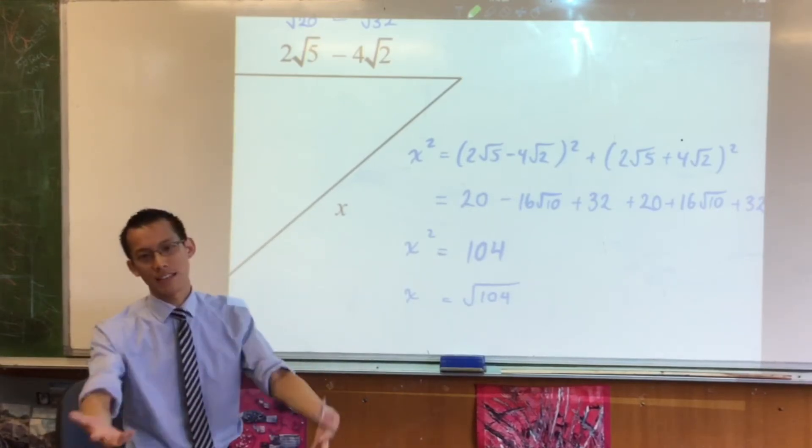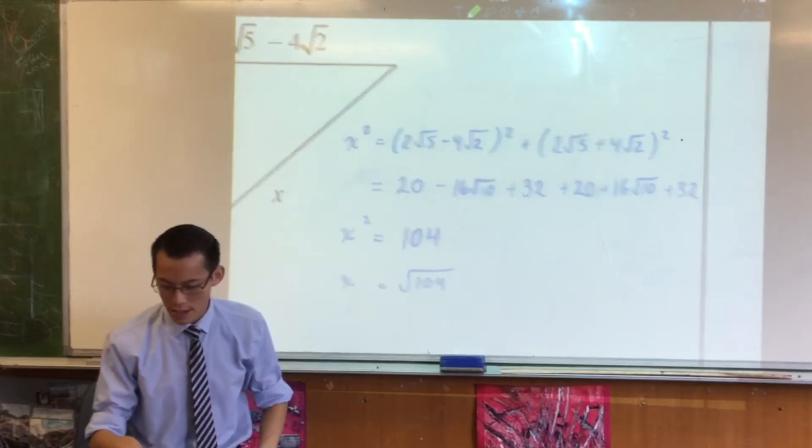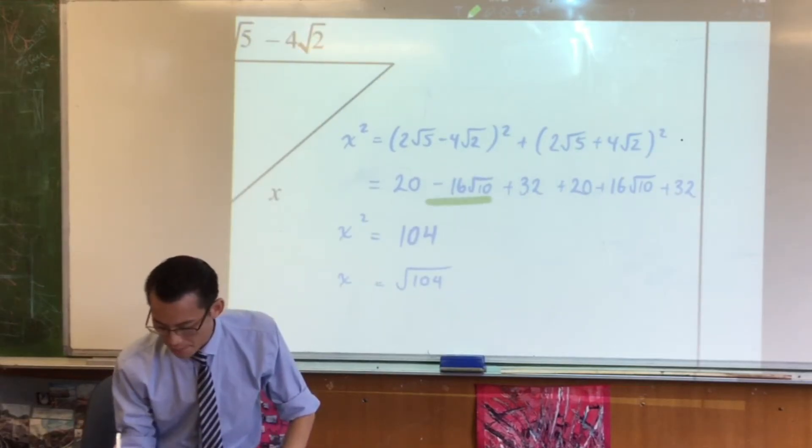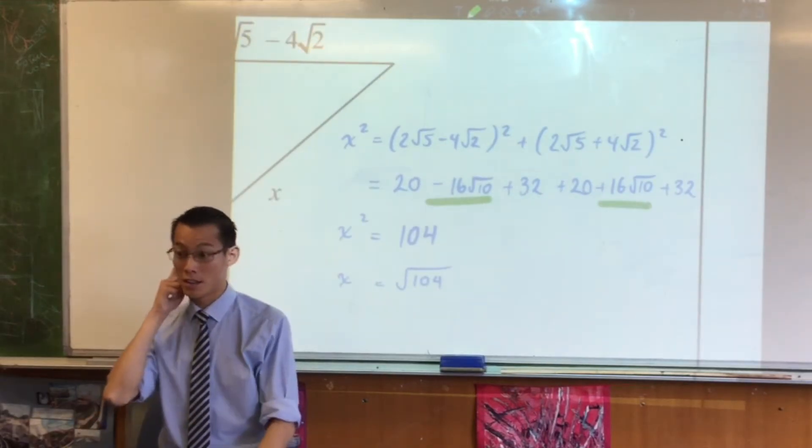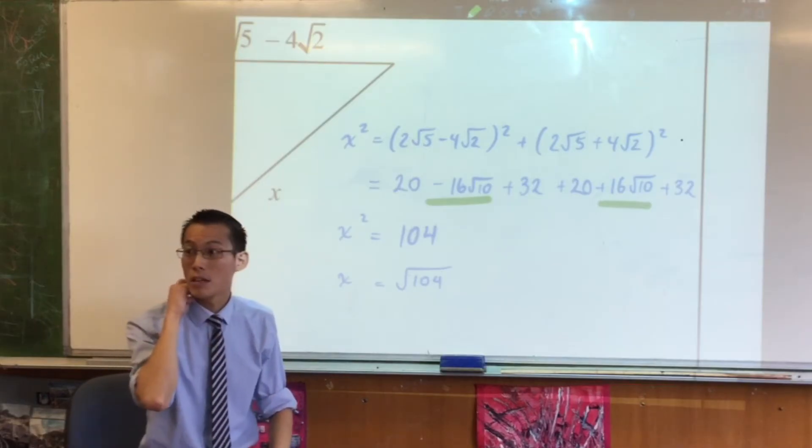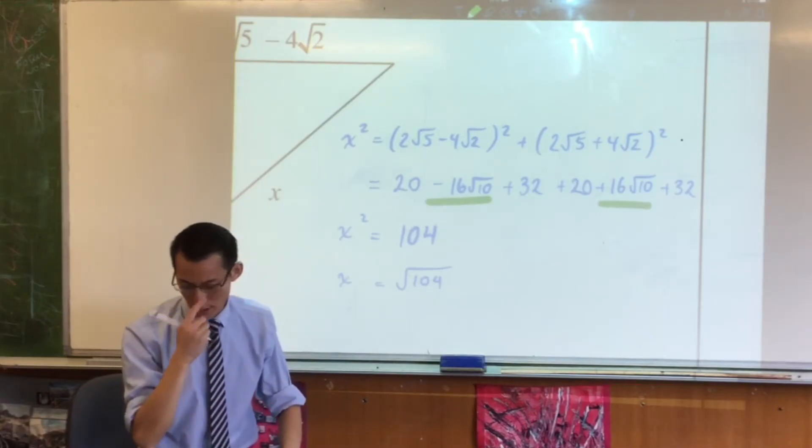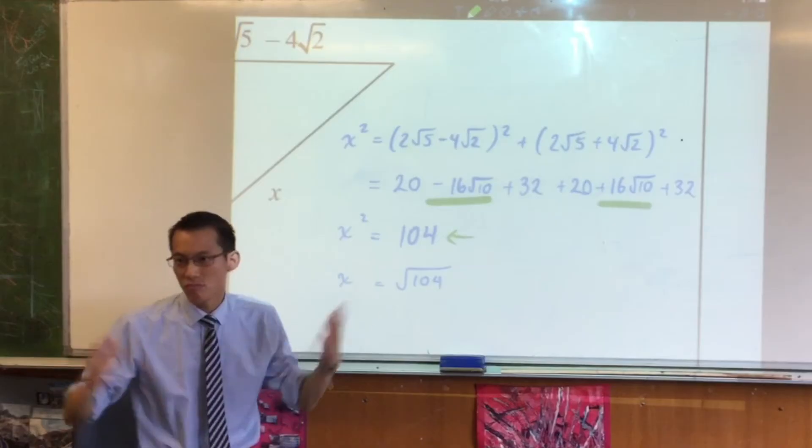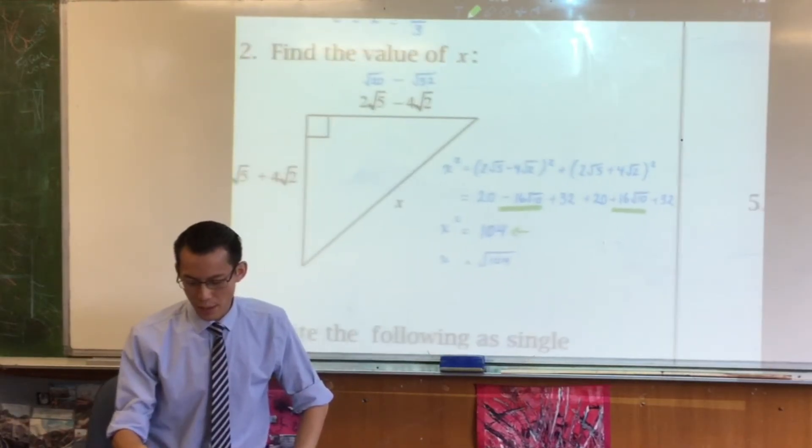Conjugates come up all the time. We use them in rationalizing denominators and so on, but what you notice is nice about them is that these two terms here, the messy ones, they just cancel out. So you shouldn't have any surds when you get to this line, then you just take the square root to both sides.